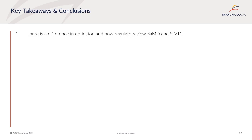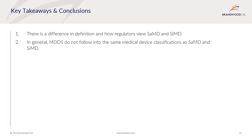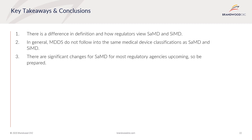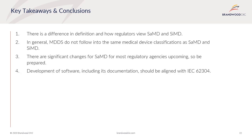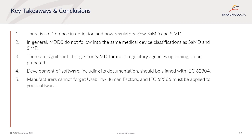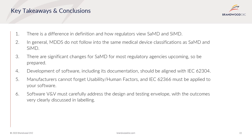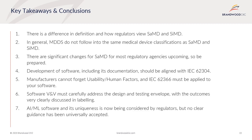To finish off this webinar, here are the key takeaways. Firstly, there is a difference in how regulators view software as a medical device and software in a medical device. In general, MDDS do not fall into the same medical device classifications as SAMD and software in a medical device. There are significant changes for software as a medical device for most regulatory agencies upcoming, so be prepared. Developmental software, including its documentation, should be aligned with IEC 62304. Manufacturers cannot forget usability and human factors — IEC 62366 must be applied. Software V&V must carefully address the design and testing envelope with outcomes clearly discussed in labeling. Finally, AI/ML software and its uniqueness is now being considered by regulators, but no clear guidance has been universally accepted.